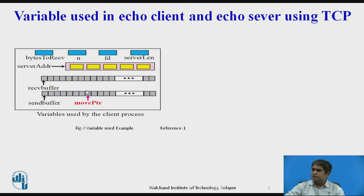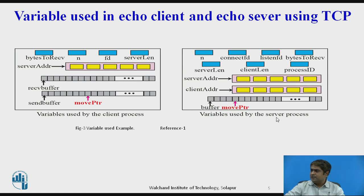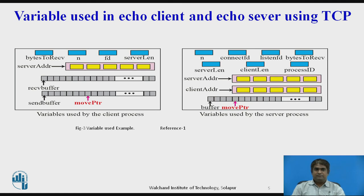The variables used in the client process are: bytes to receive, number N, file descriptor, server length, receive buffer, and send buffer. The variables used by the server process include: number N, connect file descriptor, listen file descriptor, bytes to receive, server length, client length, process ID, server address length, client address length, and the buffer. The first buffer pointer is fixed and always points to the beginning of the buffer, while the second buffer pointer moves so that arrived bytes are appended to the end of the previous section.